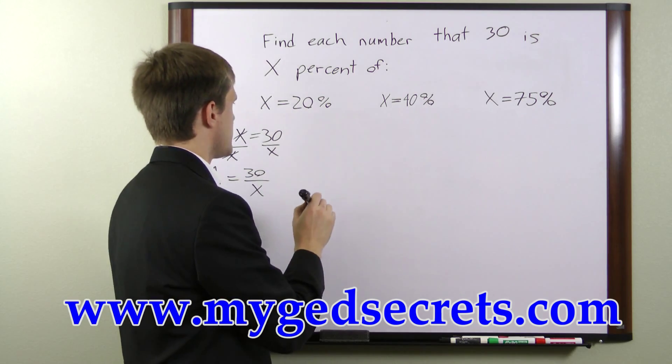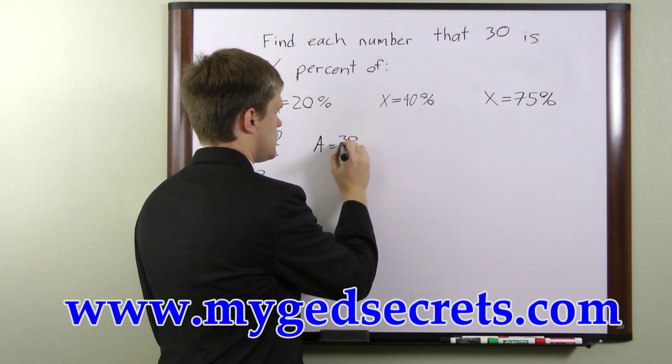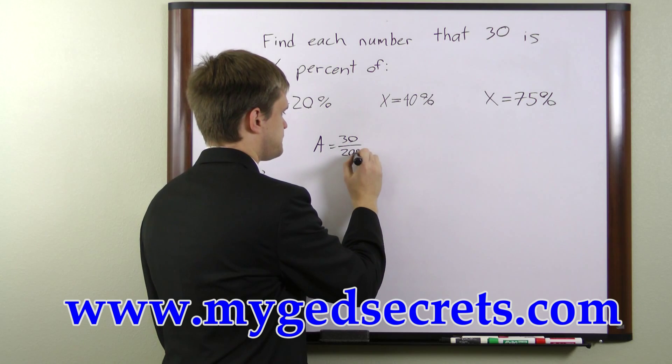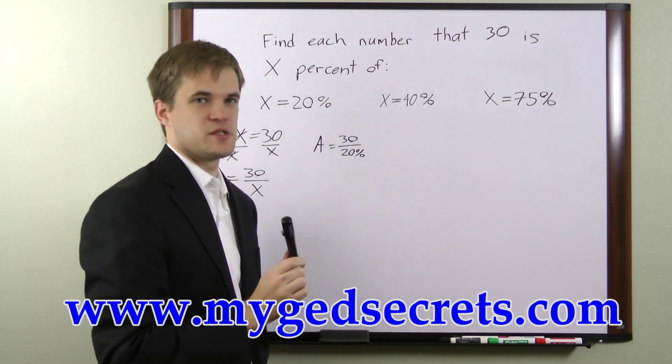For x equals 20%, we can say that a equals 30 over 20%. It's going to be easiest to work with fractions in this case.